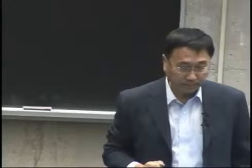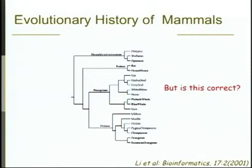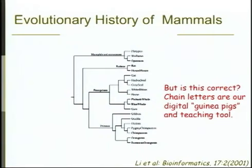Is this correct? Nobody can read all these genes. We constructed the phylogeny from the DNA or protein sequences — so how do you know these are correct? Chain letters actually provide a very readable form, a kind of digital Rosetta Stone, as a teaching tool, so that I can explain the technology of evolution to you, and so that we can understand how to read these genes.